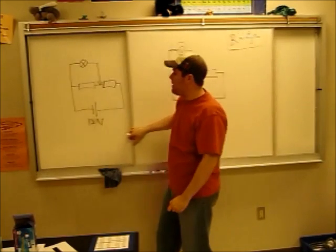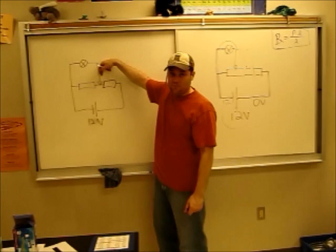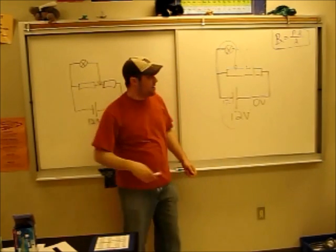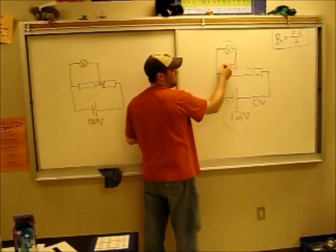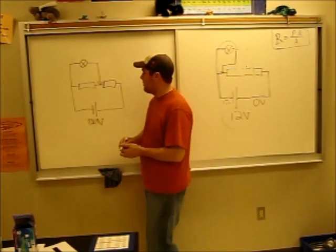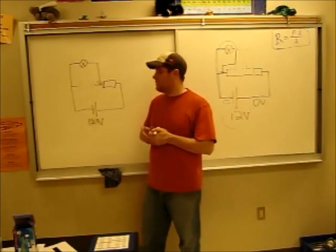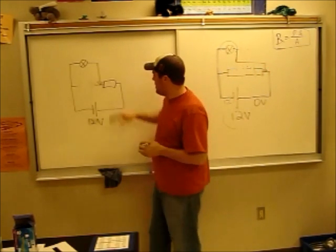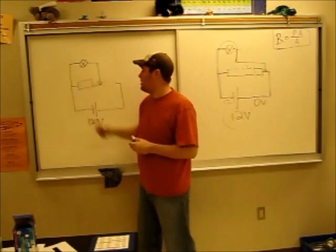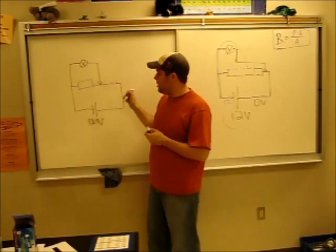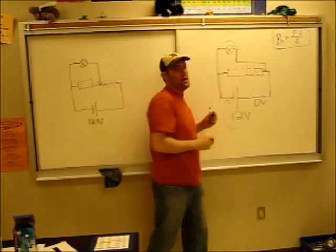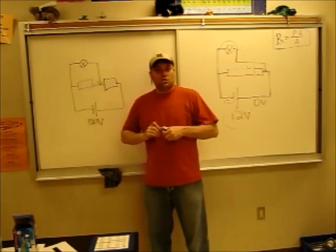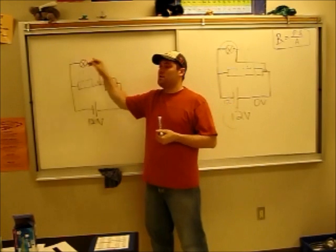Whenever we see a potentiometer, it's easiest to imagine it as splitting the wire into two different resistors — one on each side. If your connection goes all the way to one side, that means there's effectively no resistor there and all the resistance is on the other side. Where you place the slider determines how large each of the two resistors will be, and they should give you enough information to figure out those resistances and then calculate the voltage.